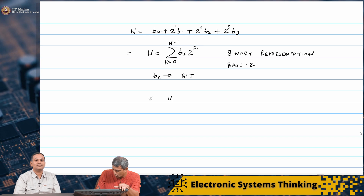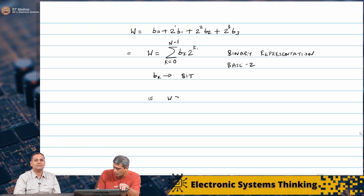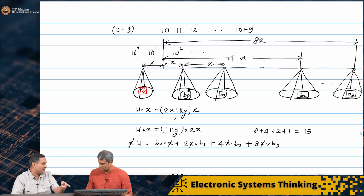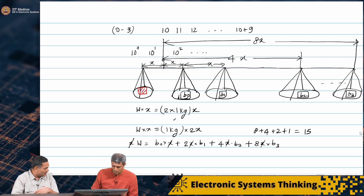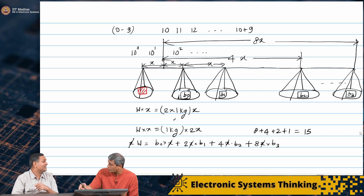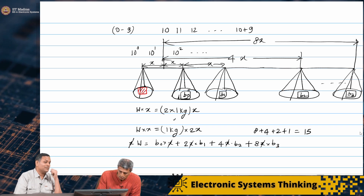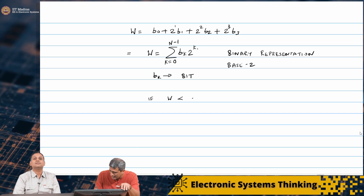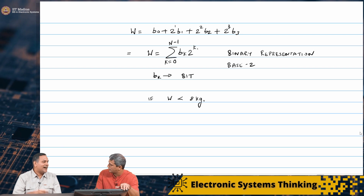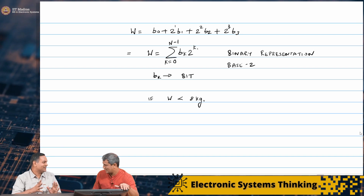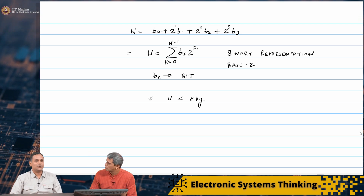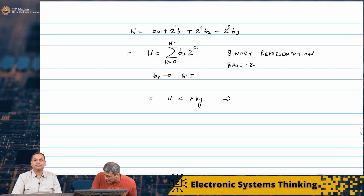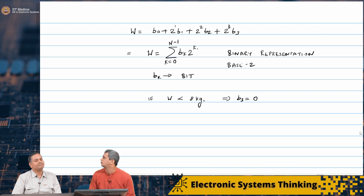What we said was: we will put a weight on B3, and if it goes down - if B3 goes down - then the weight is too light. You have to go down. So if W is less than 8 kg, then I have to remove B3. That is important - otherwise anything I add will only make it increase. So you remove B3; in other words, the digit has to be set to 0. If W is less than 8, it implies B3 is 0. But if the weight is more than 8 kg, then B3 has to be 1 - you need at least 8 kg weight there to measure it.